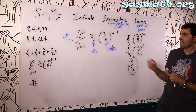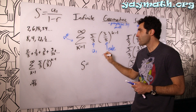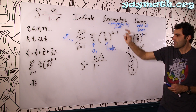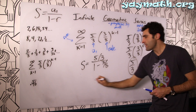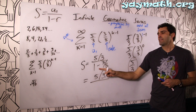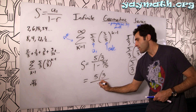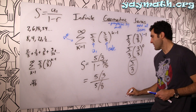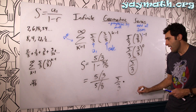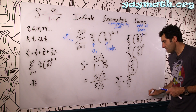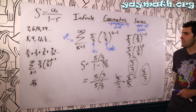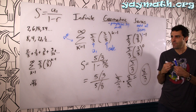Let's get this infinite sum. Sum equals first term five over three, over one minus the rate three over eight. Eight over eight minus three over eight is five over eight. So we get five over three times eight over five — the fives cancel, and we get eight over three.